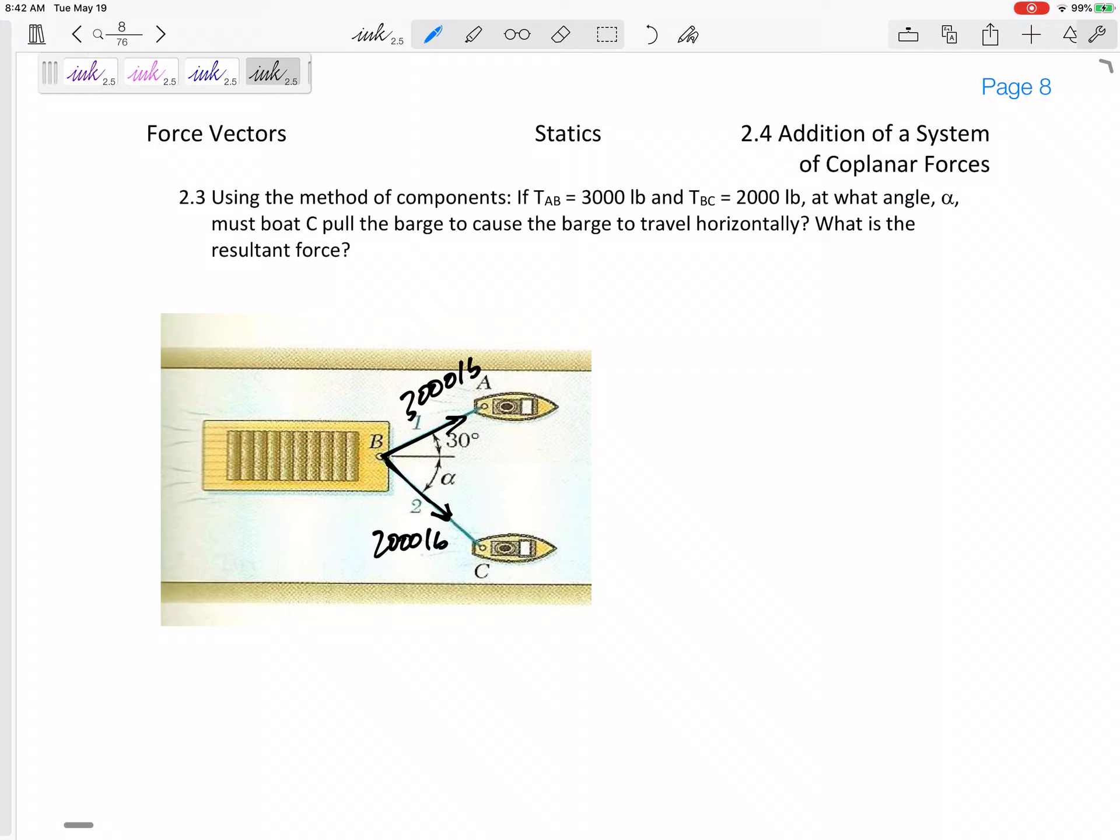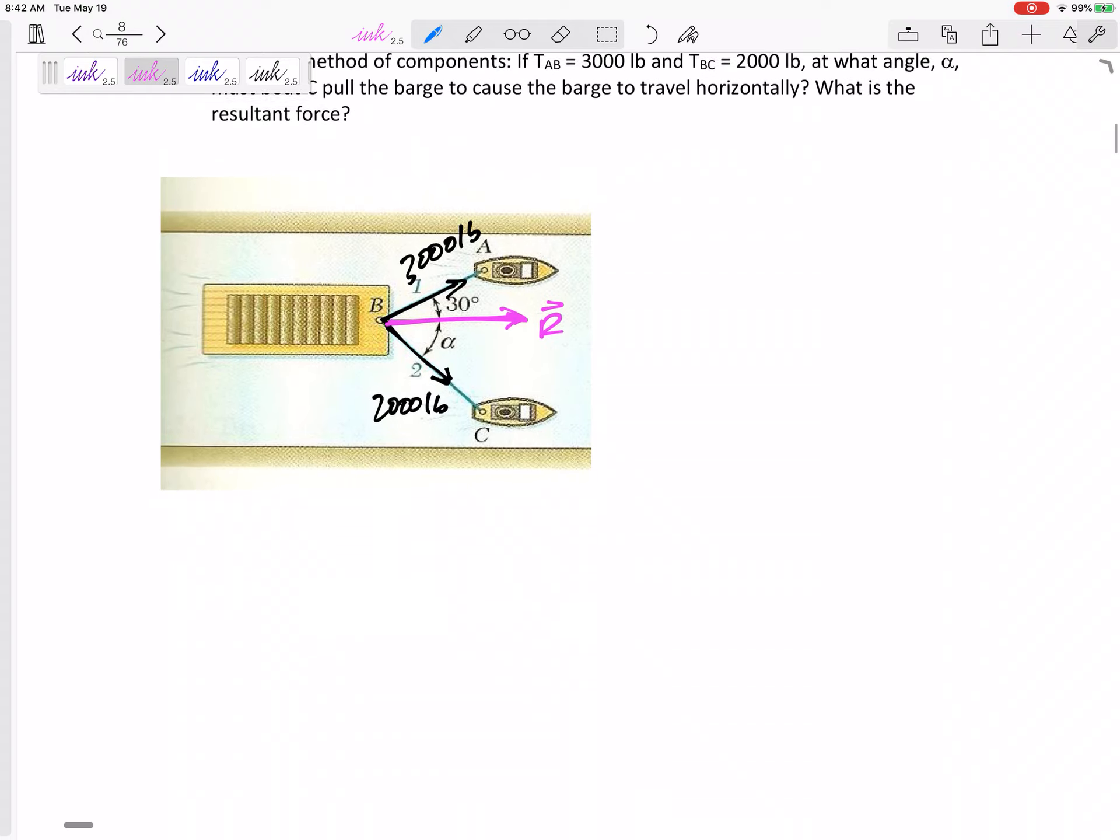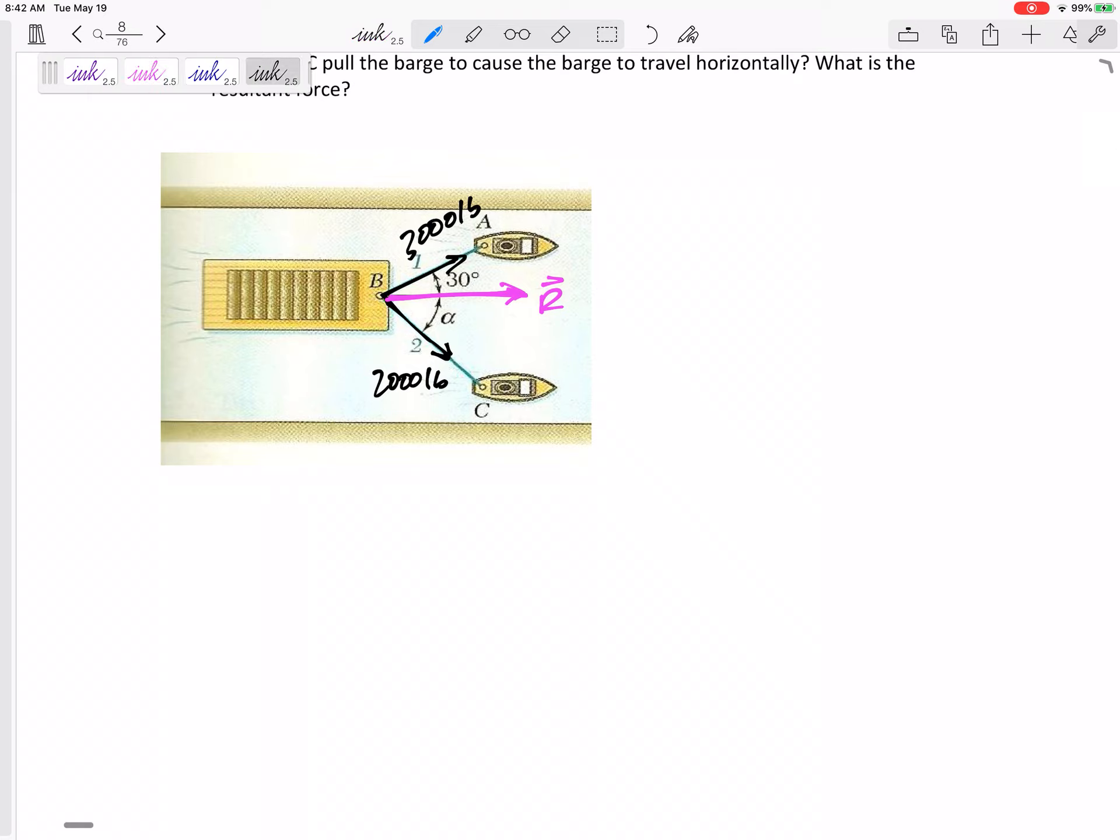We've got 3,000 pounds of tension and tension 2 is 2,000 pounds in tension. And it says, what angle alpha must boat C pull the barge so that the barge will travel horizontally? And what is the resultant force? So does it say to add them? Not exactly, but do we know that we need to add them and the resultant, we want the resultant to be horizontal. We want to add the two and we want the resultant to be horizontal.